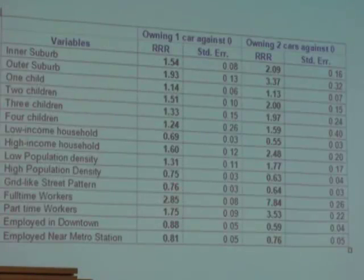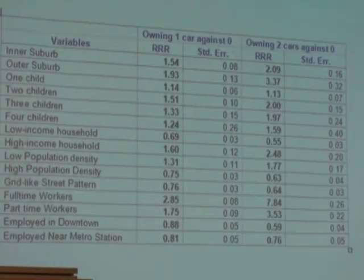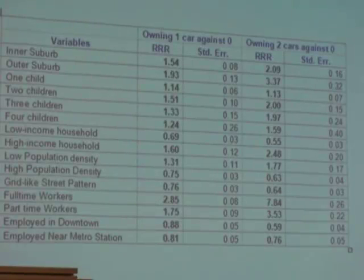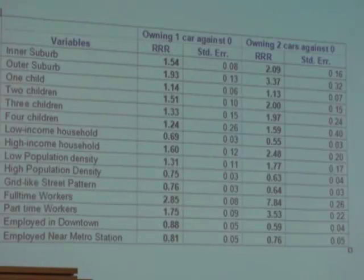Alternatively, you can compute the odds of owning no car versus a car using the inverse — 1 over the exponential. A high-income household is 60% more likely to own a car rather than not owning a car compared to a medium-income household, which is the base case.